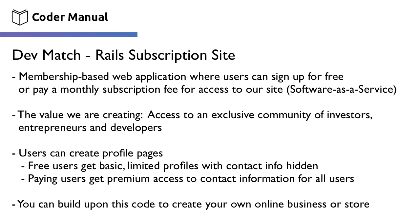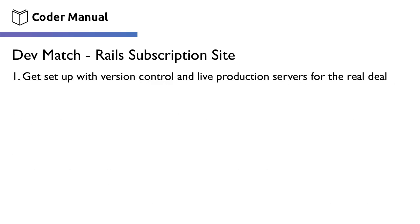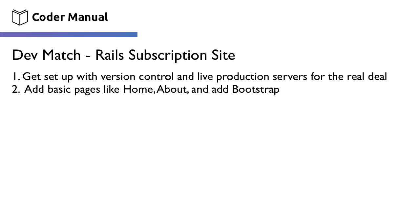The first thing we're going to do is get set up with some technology that helps us manage the application and deploy it to production-grade live servers. From there, we'll add a few basic pages to the website like a home page as well as an about us page, and then we'll add some Bootstrap to make the site look really good right off the bat.